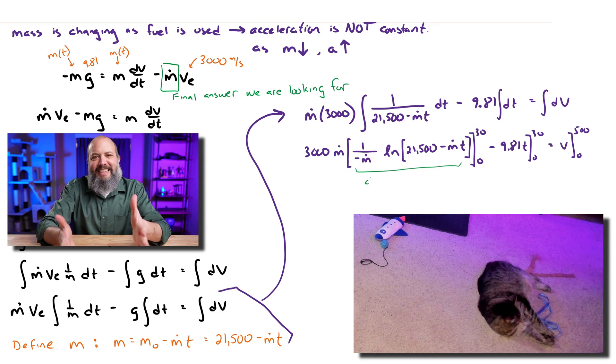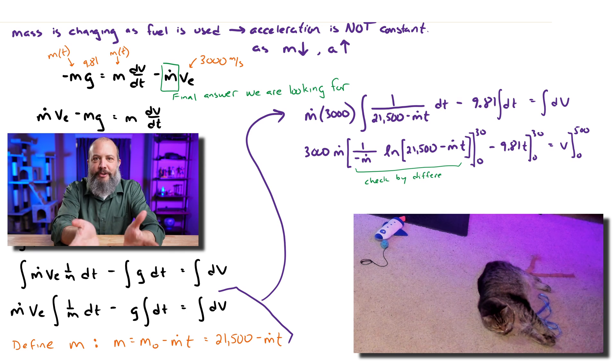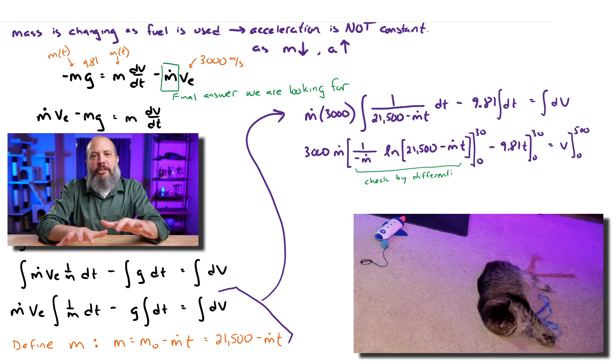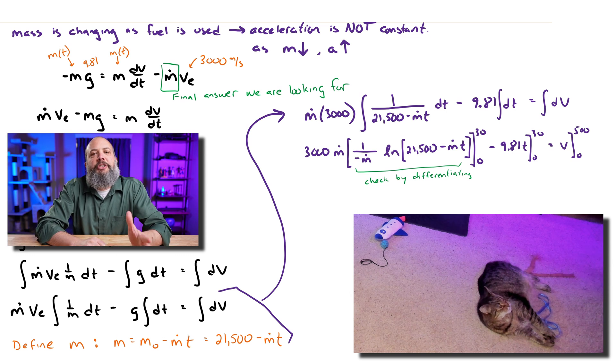And we can double check this by taking the derivative of this term to make sure we get back what we started with. So this isn't a product rule because m dot is a constant. That's just a number. It's a coefficient, not a variable.